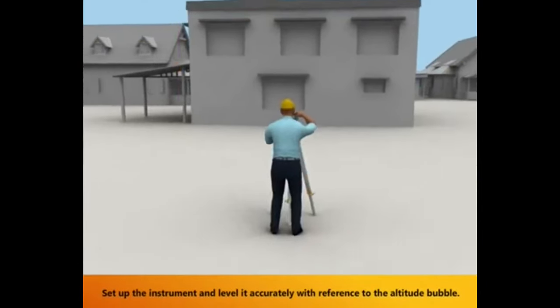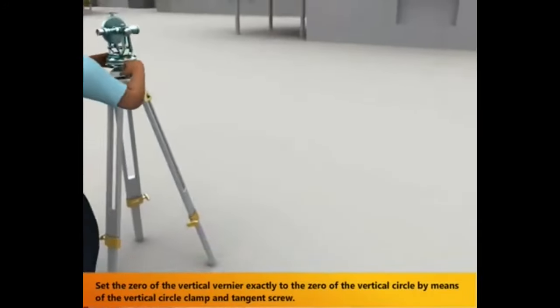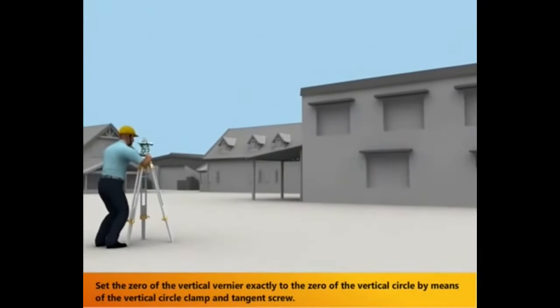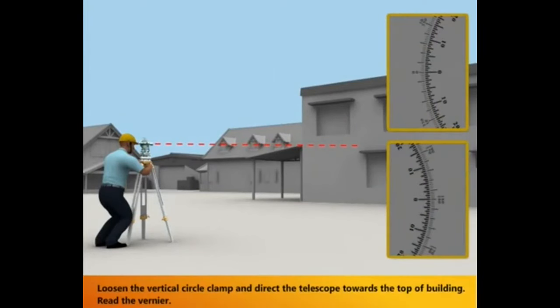Set up the instrument and level it accurately with reference to the altitude bubble. Set the zero of the vertical Vernier exactly to the zero of the vertical circle by means of the vertical circle clamp and tangent screw. Loosen the vertical circle clamp and direct the telescope towards the top of the building. Read the Vernier.